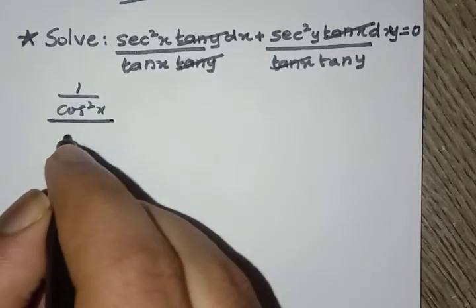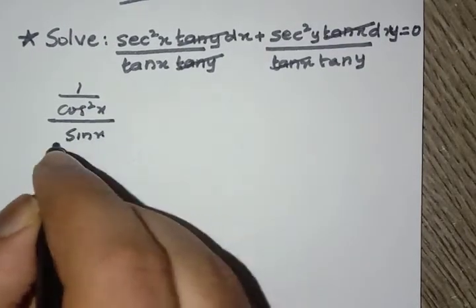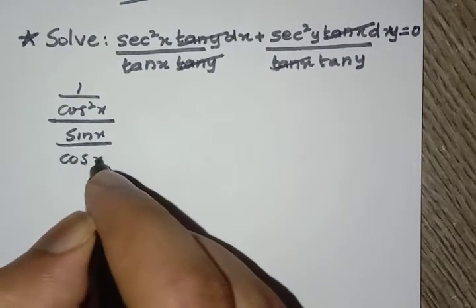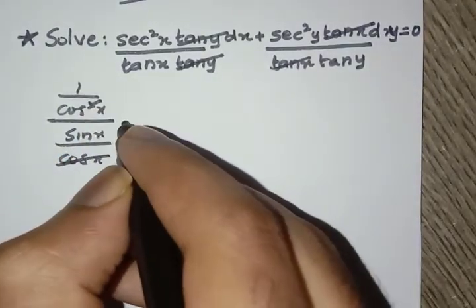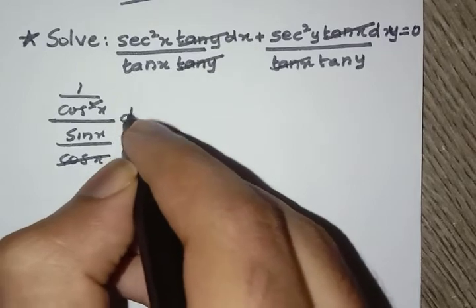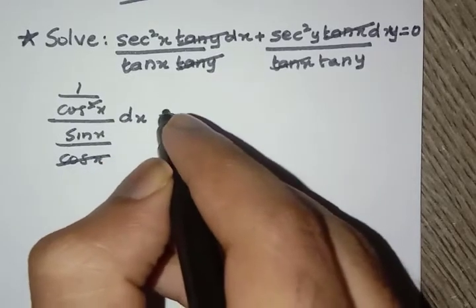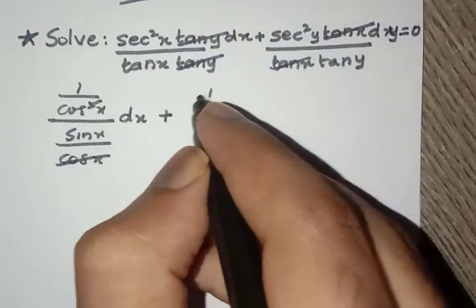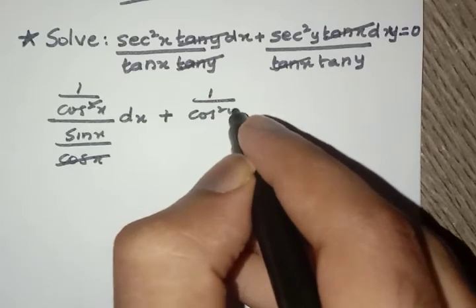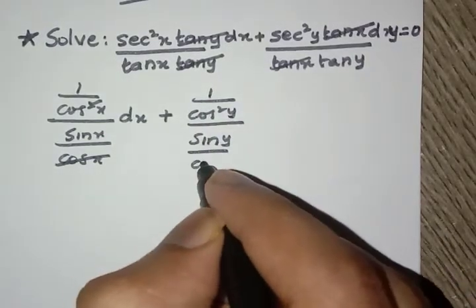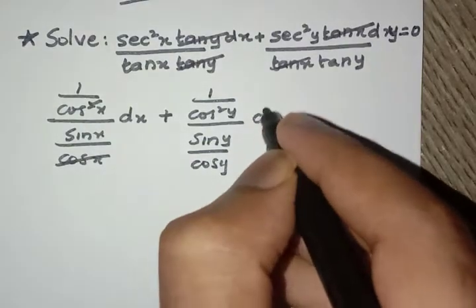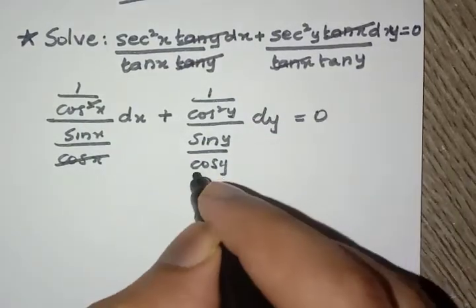Now let's divide. We can write this as 1 over cos²x dx divided by sin x over cos x, plus 1 over cos²y dy divided by sin y over cos y.